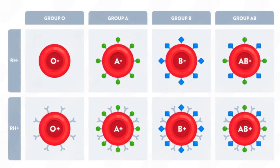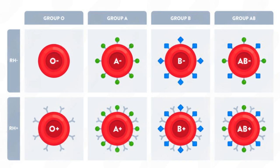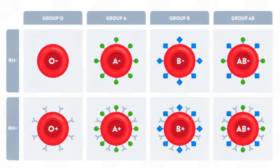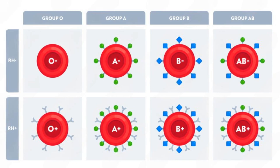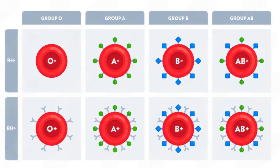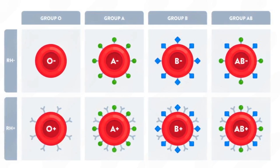On the basis of this RH factor, 8 blood types can be created: A positive, B positive, AB positive, and O positive when the RH factor is present; and A negative, B negative, AB negative, and O negative when the RH factor is absent.